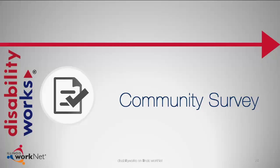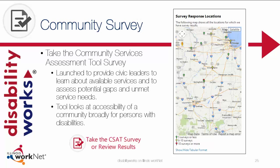The next section is the Community Survey. In 2011, DisabilityWorks launched the Community Services Assessment Tool, or CSAT, a project to provide civic leaders with a structured process to learn about the available services to persons with disabilities in a specific community and to assess potential gaps and unmet service needs that may inhibit the full participation of people with disabilities. A community may be a region of the state, county, town, or neighborhood. The information acquired through this process will help local communities to improve program services, reduce duplication, and make the overall community more responsive to the participation of its residents.